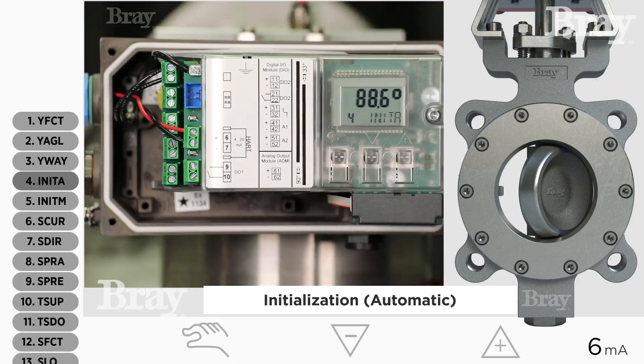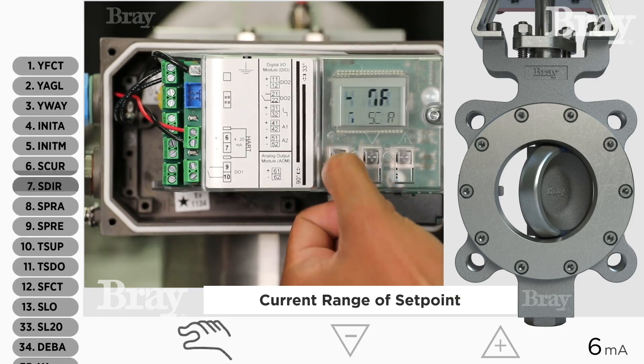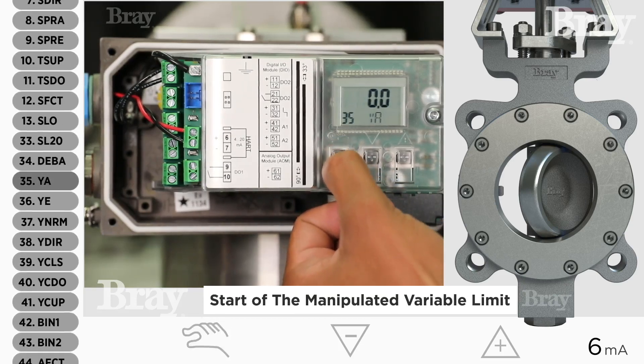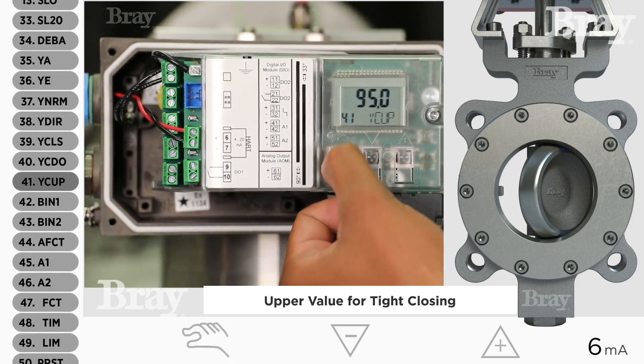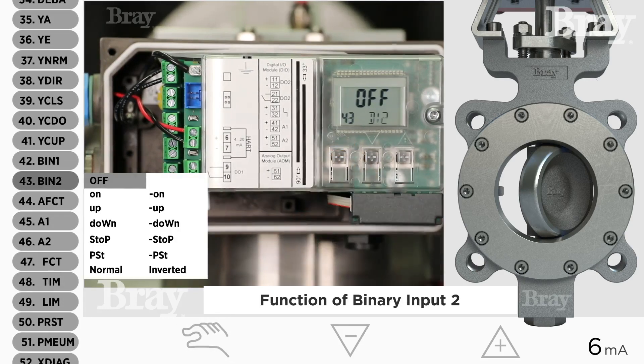We're going to go to variable 43 and I'll be using binary input number 2. We're using binary input 2 because we're using the alarm card, which gives us the ability to hook up a 24 volt signal.